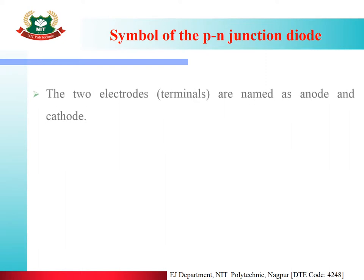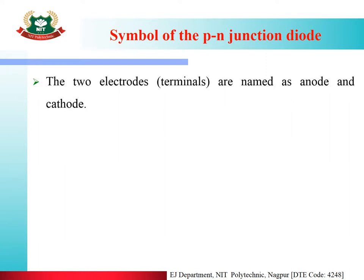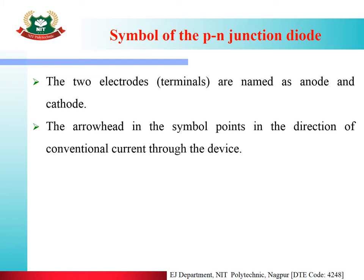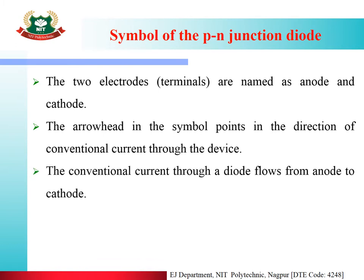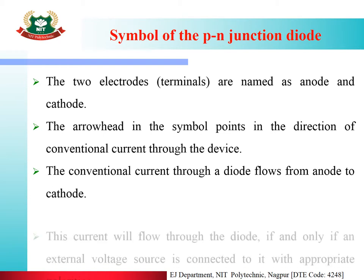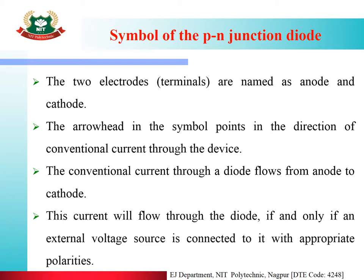About the symbol of the PN Junction Diode: the two electrodes, i.e. terminals, are named as Anode and Cathode. The arrowhead in the symbol points in the direction of conventional current through the device. The conventional current through a diode flows from Anode to Cathode. This current will flow through the diode if and only if an external voltage source is connected to it with appropriate polarities.